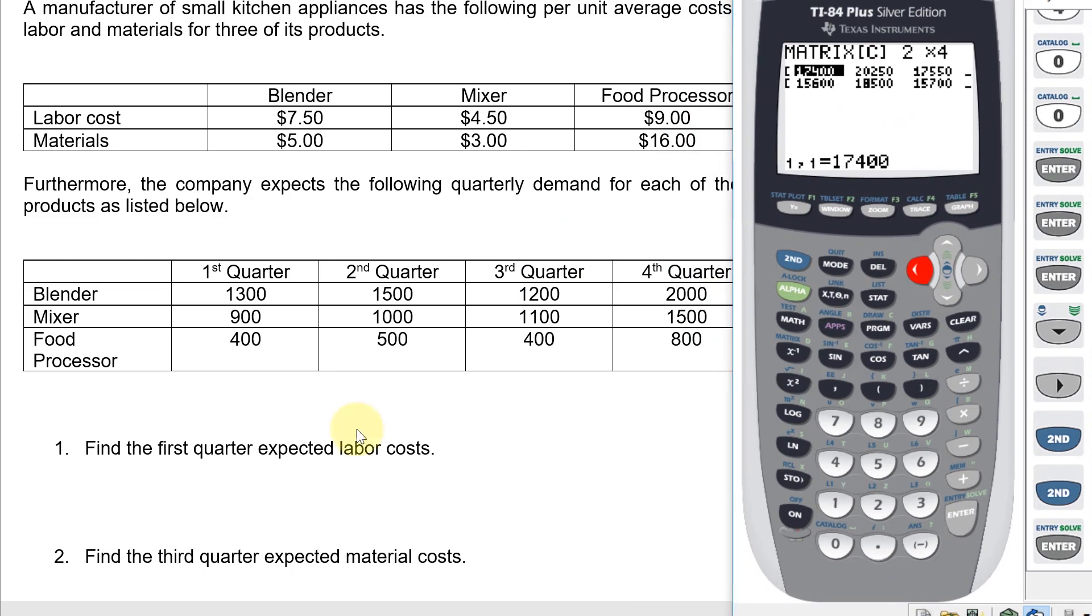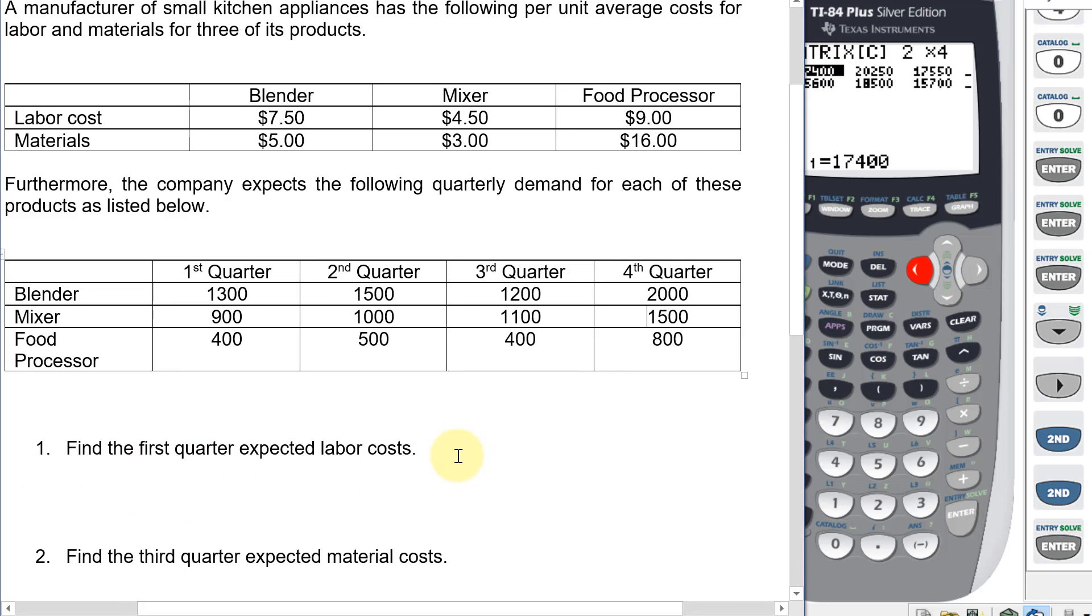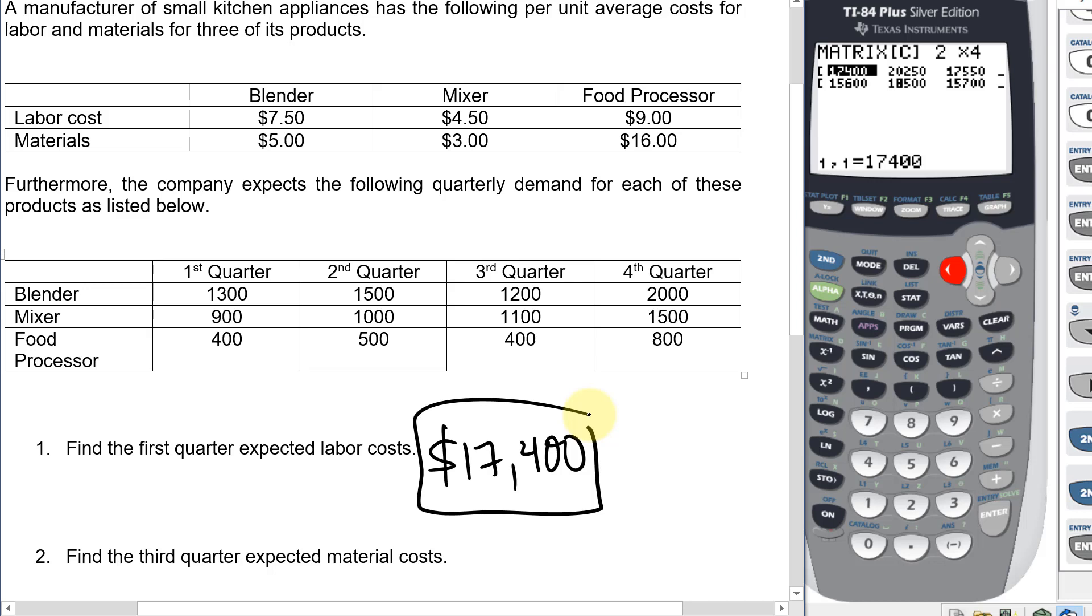Okay, so anyway, I want to answer first quarter expected labor costs. Well, that would be the $17,400. Third quarter expected material costs. So that's $15,700, that one right there. That's the third quarter and material costs at the bottom row, so $15,700.